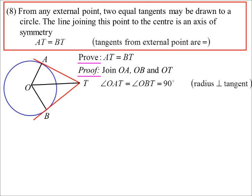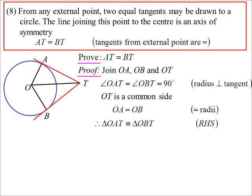So from what we just saw, we know the radius is perpendicular to the tangent. So OAT and OBT, they're both equal to 90. O-T is a common side in both triangles, and O-A and O-B are both radii. So we've got right-angle hypotenuse side. So yes, they are congruent. So therefore, A-T and B-T, they become matching sides in congruent triangles. So there's our proof of that little theorem.